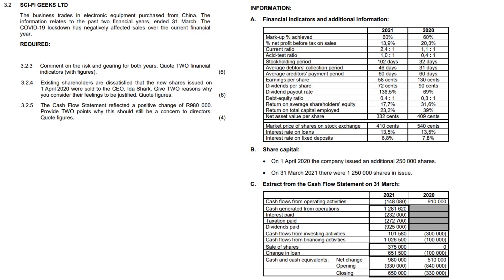Hi everyone. This segment of work focuses on question 3.2, specifically 3.2.3, 3.2.4 and 3.2.5. It's an extension of the previous clip, and here we are asked to comment on the risk and gearing for both years. They want us to quote two financial indicators with figures to justify our answer.